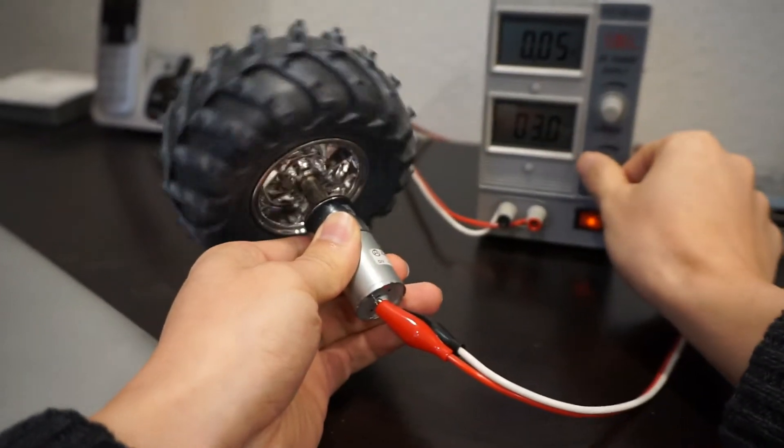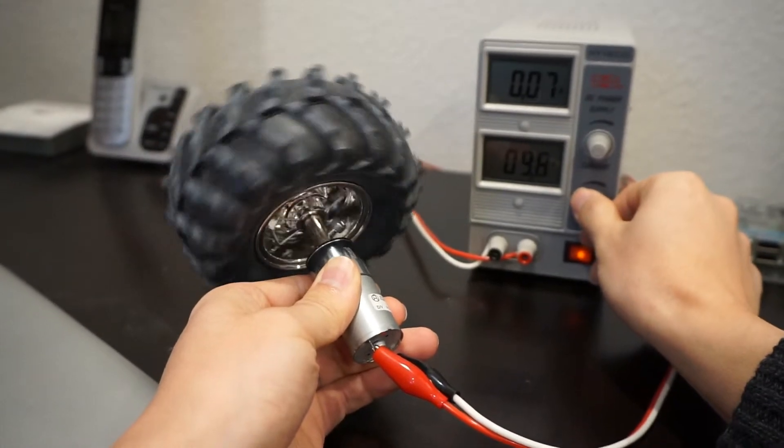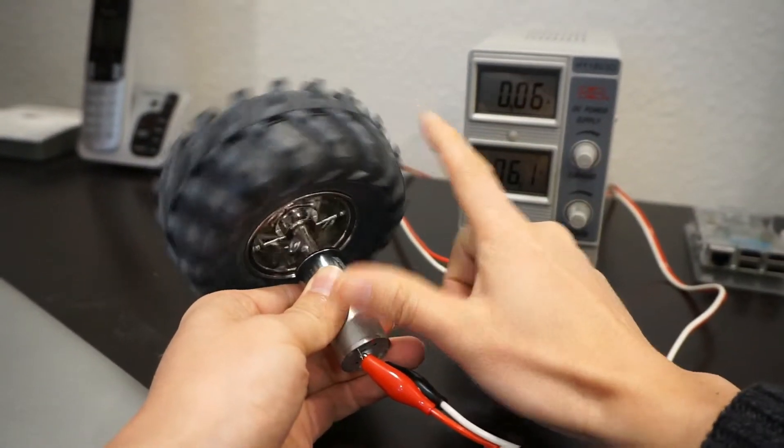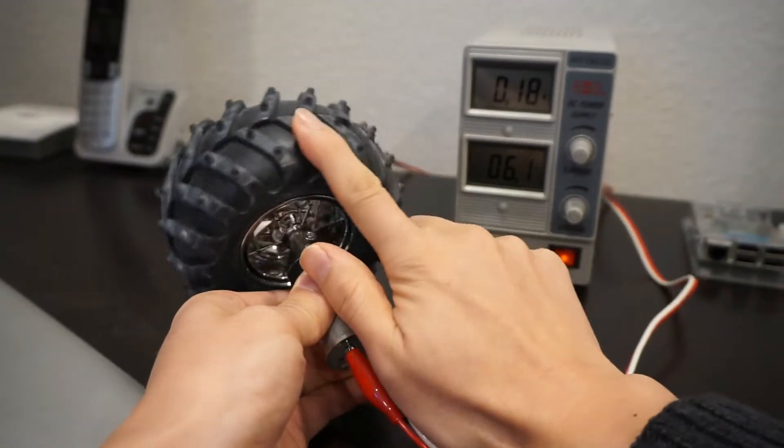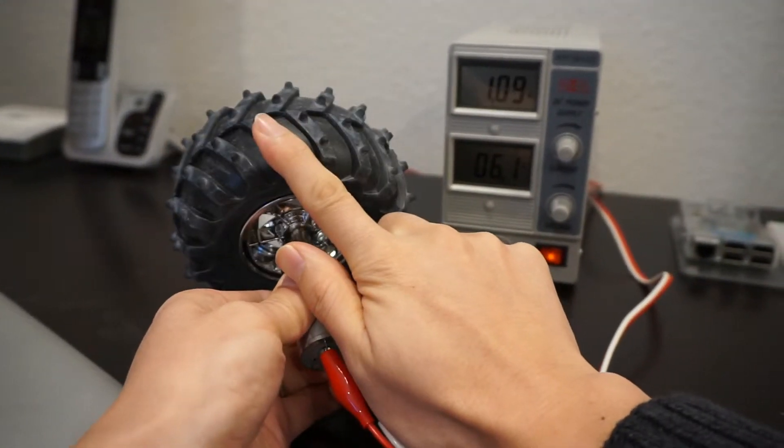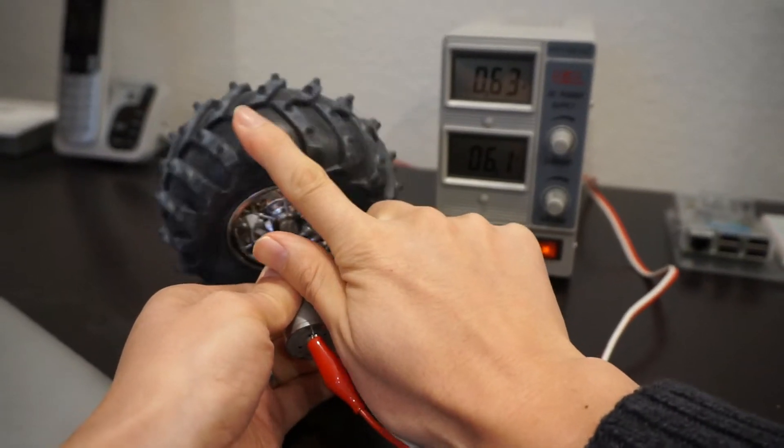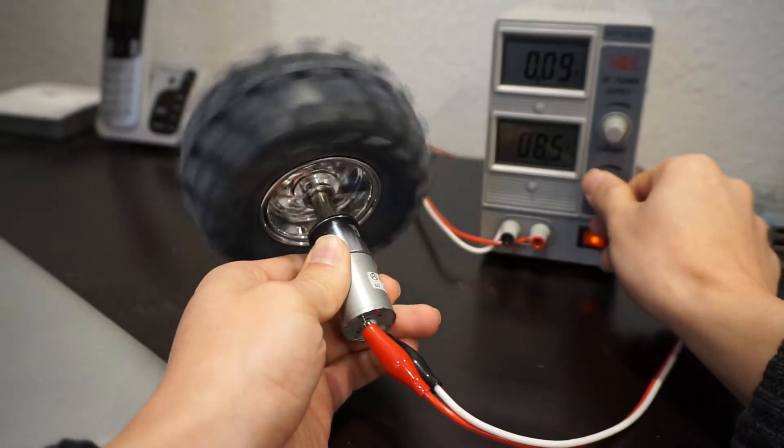At half power, if you stop it, it's much harder to stop, and the stall current is about 1 amp. At full power, it's even harder to stop.